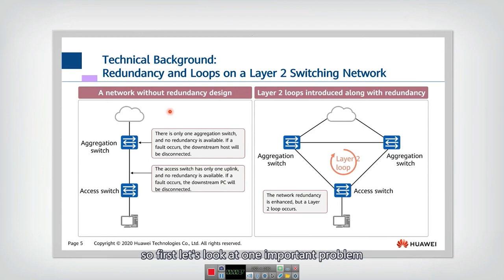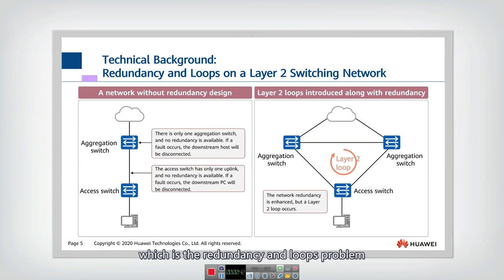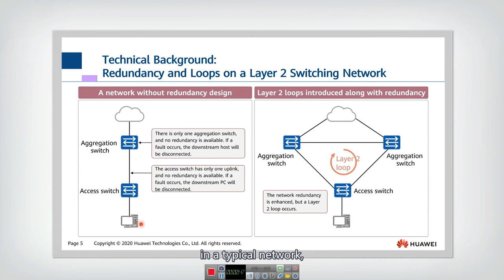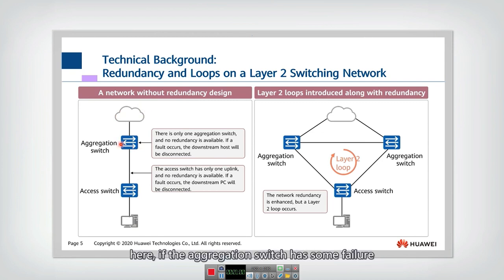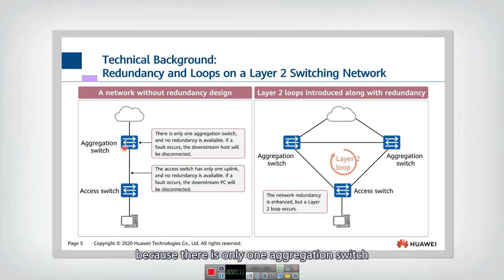First, let's look at one important problem in Layer 2 switching networks, which is the redundancy and loops problem. In a typical network, computers or hosts are connected through the access switch into the aggregation switch and finally to the internet. If the aggregation switch has some failure, all the downstream hosts will be disconnected because there is only one aggregation switch — there is no redundancy.